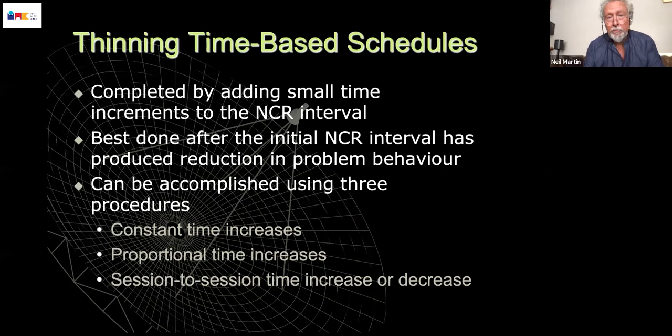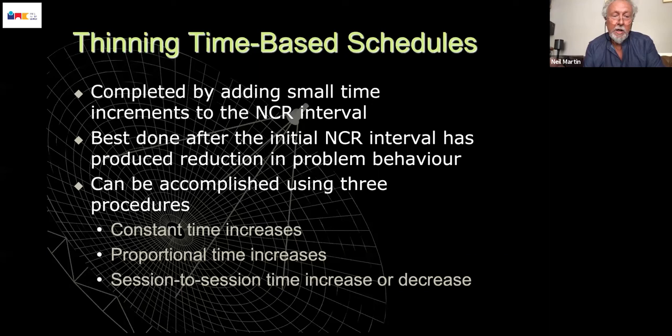You wouldn't really want to thin until you had affected a reduction in problem behaviour. So when your data tell you the problem behaviour is reduced, then you can think about thinning the schedule. You can do that either by constant time increases — adding five or 10 seconds each time — proportional time increases such as doubling each time, or make your determination on a session-by-session basis according to what the data tell you. That would be my preferred method.